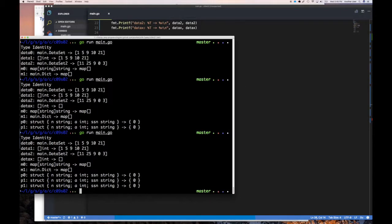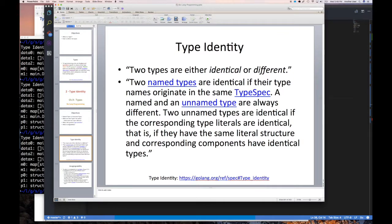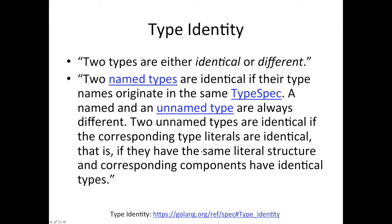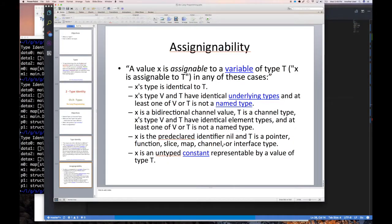So the structure has to be the same. We understand when types are different. There are only two things to consider: named types and unnamed types. Two named types are the same only if they have the same type spec. Named and unnamed types are always different. Two unnamed types are only the same when they have literally the same structure.